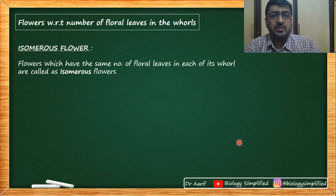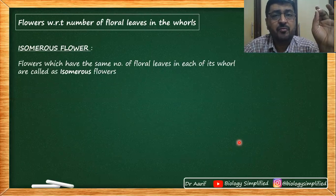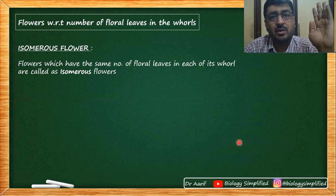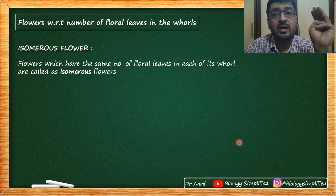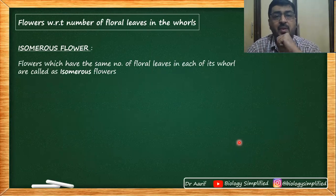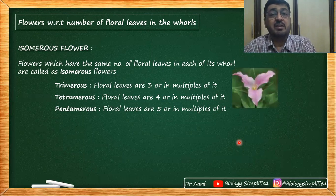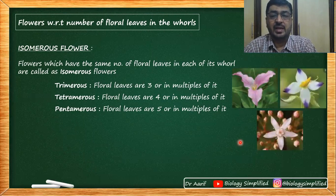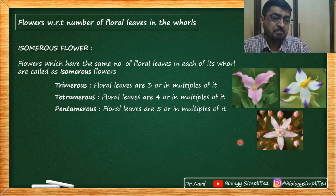With respect to the number of floral leaves: calyx is made up of sepals, corolla is made up of petals. If a flower has the same number of members in each of its four whorls — say three sepals, three petals, three stamens, three carpels — the flower is called isomerous. Isomerous flowers can be trimerous, tetramerous, or pentamerous.